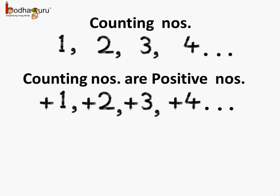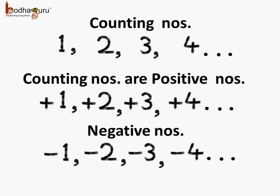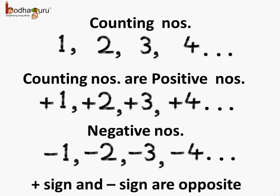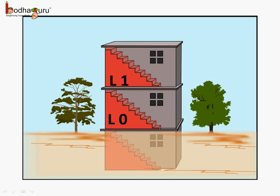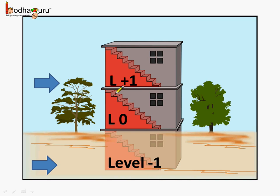Now we also know the new types of numbers, which are negative numbers, such as minus 1, minus 2, minus 3, minus 4 and so on. Plus sign and minus sign are opposite in nature. Hence, they are used to represent opposite things in life. In case of floors, if the ground floor represented 0, then to represent the floors above the ground floor and below the ground floor, we used positive numbers and negative numbers.